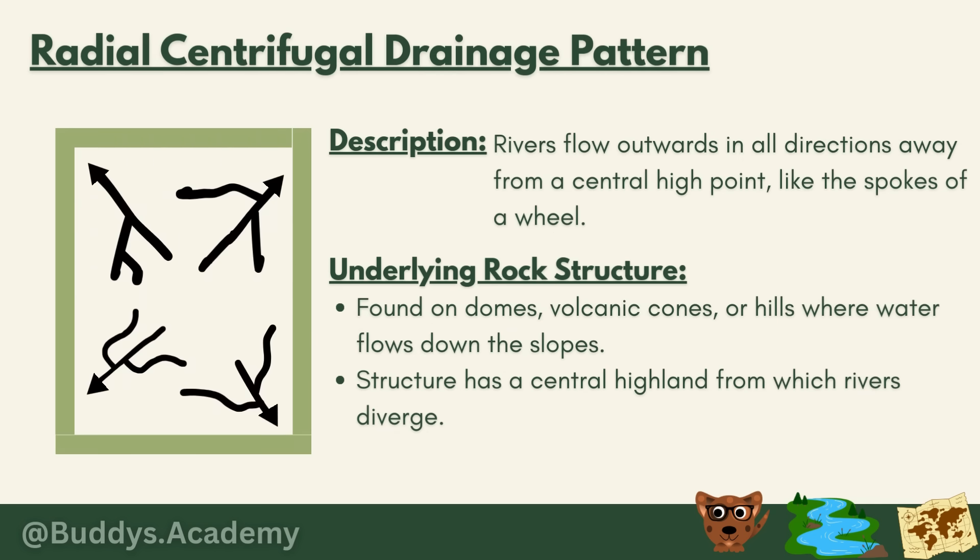The third drainage pattern is the radial centrifugal drainage pattern, where rivers flow outwards in all directions away from a central high point — resembling the spokes of a wheel. That central high point is either a volcano or a dome. It is found on domes, volcanic cones or hills where water flows down the slopes, and the structure has a central highland from which rivers diverge. It is associated with massive igneous rocks, and in the diagram, arrows pointing away from the center represent the direction of river flow.